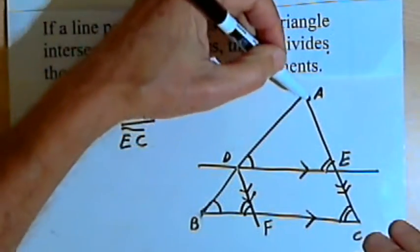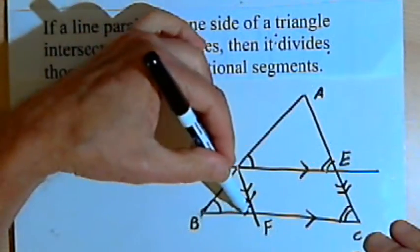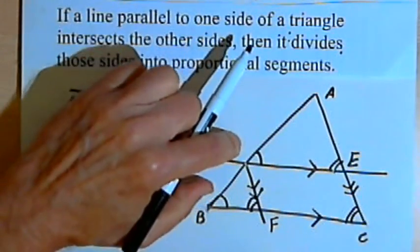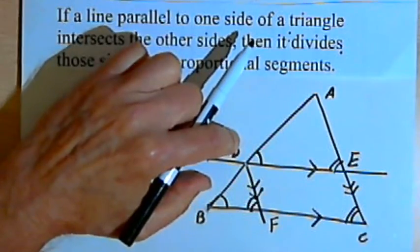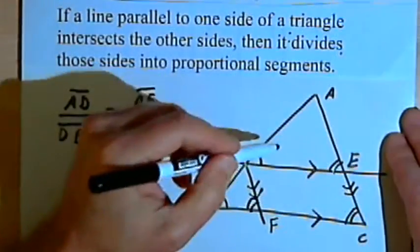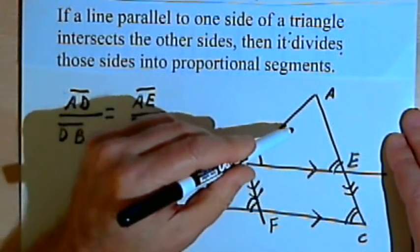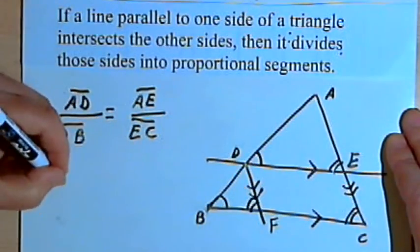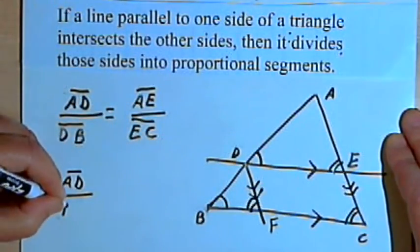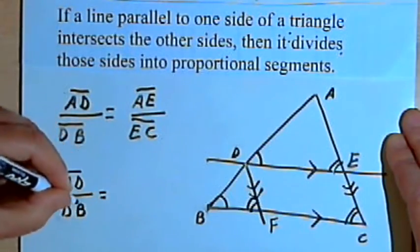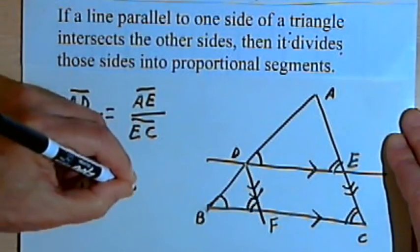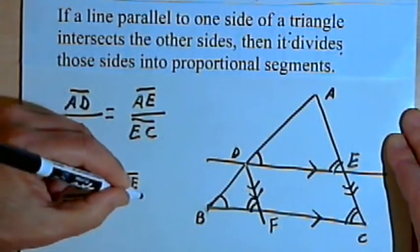Now let's look at triangle ADE and triangle DBF. We can see that these are similar triangles because they've got two pairs of corresponding angles that are congruent to each other — we've got angle-angle similarity. If these two triangles are similar to each other, then their sides are proportional. That would mean that side AD over its corresponding side DB would be the same fraction as side AE over its corresponding side DF.